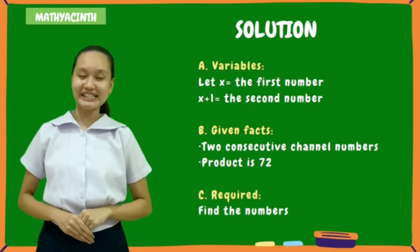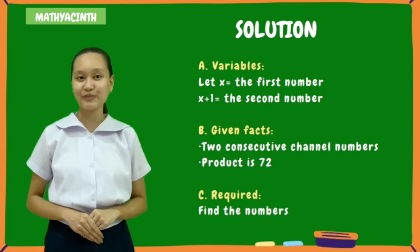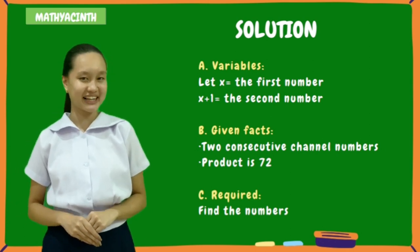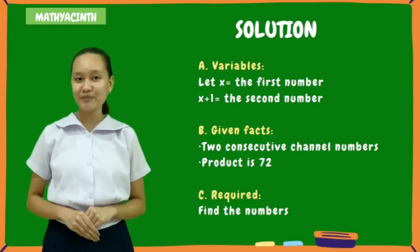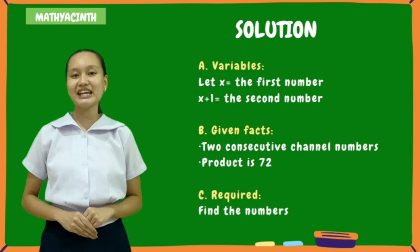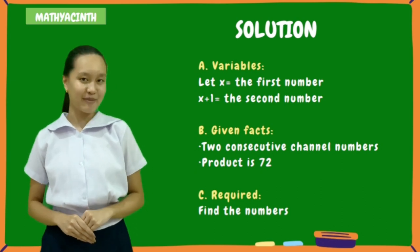Letter A. Variables. Let x equals the first number and x plus 1 equals the second number. Letter B. Given facts. Two consecutive numbers and the product is 72. Letter C. Required. We should find the numbers.